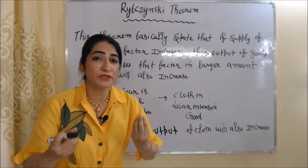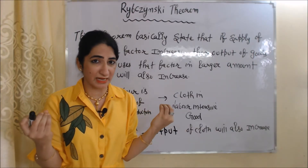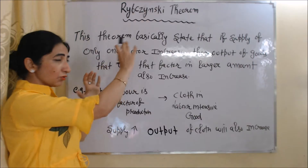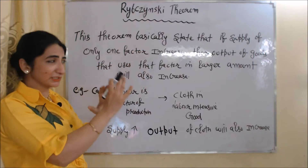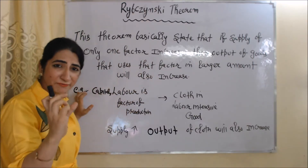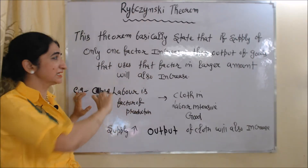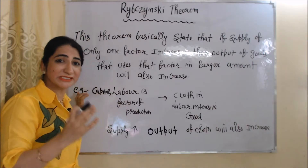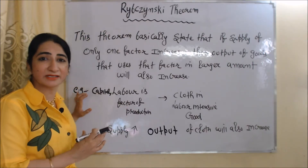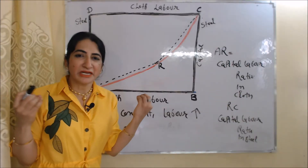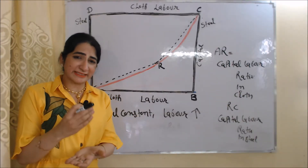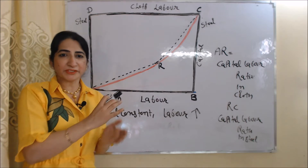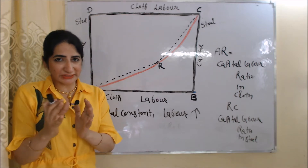In production of cloth, we use labor in larger amount. So we can say that according to this theorem, if supply of only one factor increases, then output of goods that uses that factor in larger amount will also increase. Now we will understand this theorem with the help of an edge-of-the-box diagram.